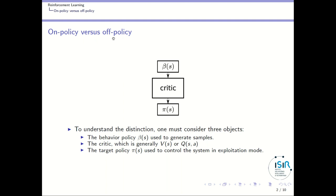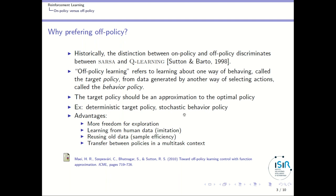Let's start with the distinction between on-policy and off-policy. To understand the distinction, you need to consider three objects. First, you must consider a behavior policy, which is used to generate samples that will be used for learning. You need to consider also the critic, which can be either the value function V(s) or the action value function Q(s,a). And finally, you need to consider the target policy P(s), which will be used finally to control your system in exploitation mode.